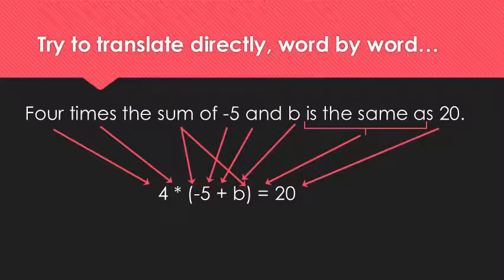When I see four times, it's pretty obvious to write down a four and then a multiplication sign. The sum of is an indicator of grouping symbols, so I put some parentheses down. Negative five and b is a way of representing addition of negative five and b together. Is the same as indicates our equal sign. And then 20 there at the end.